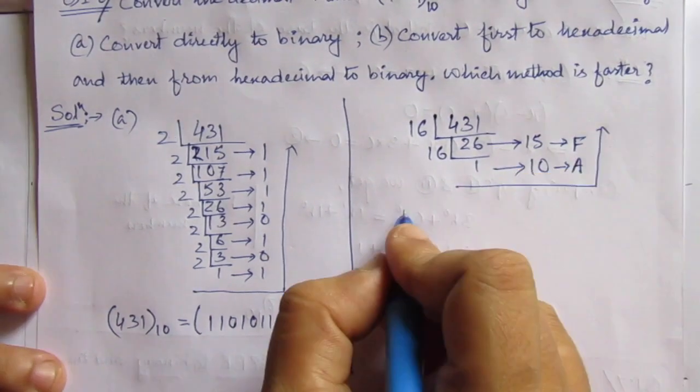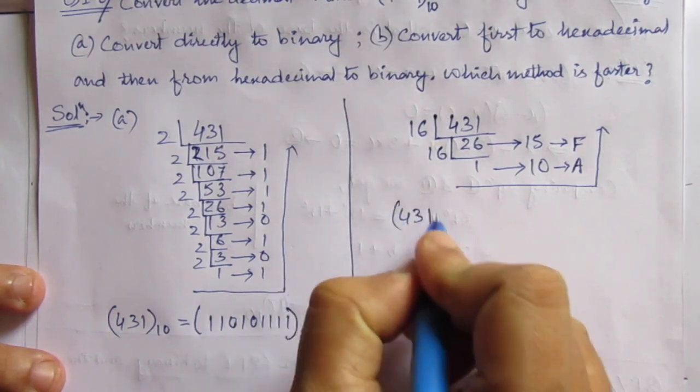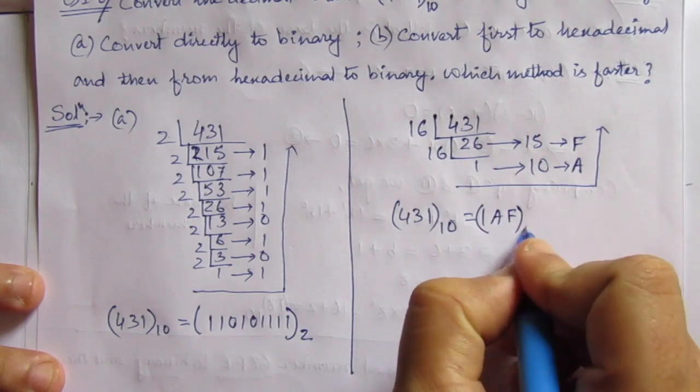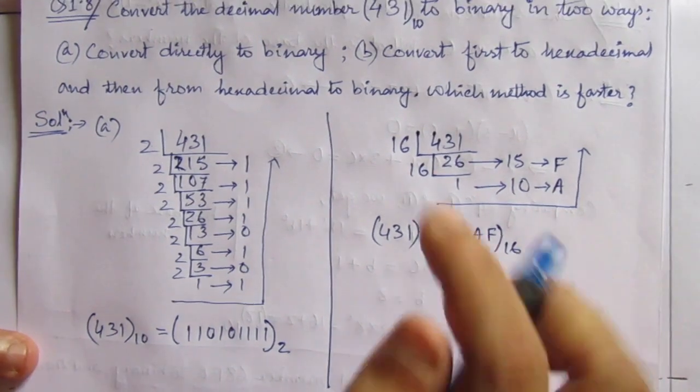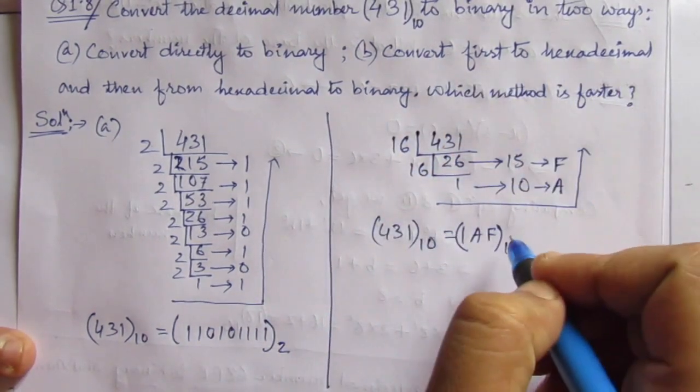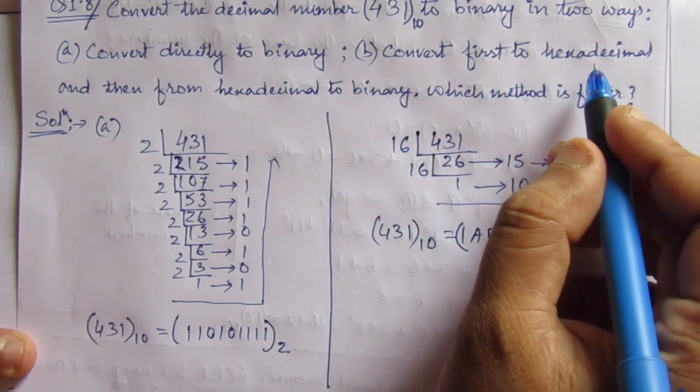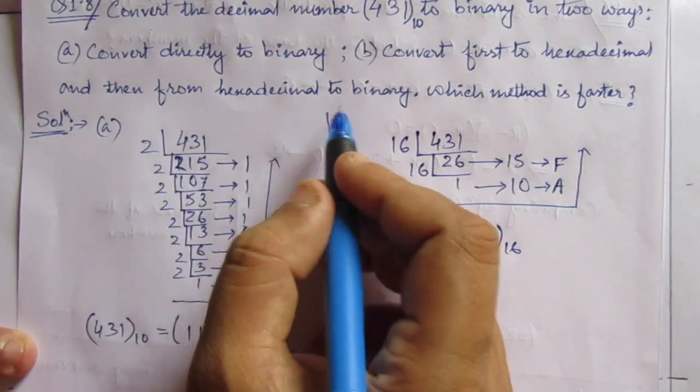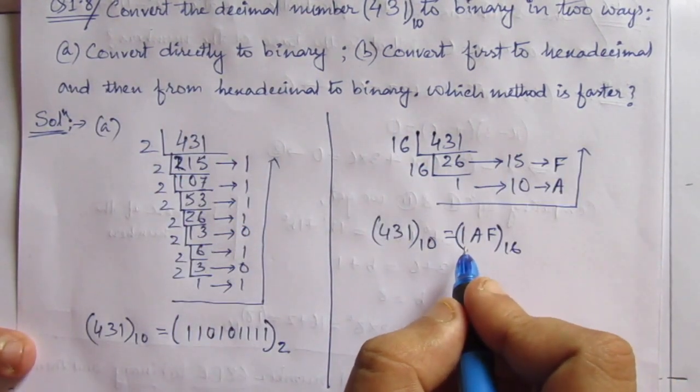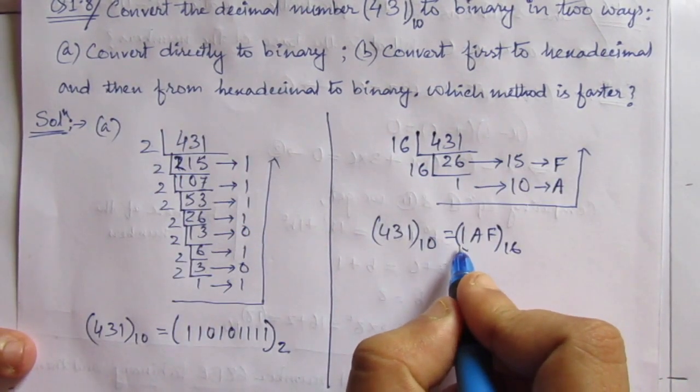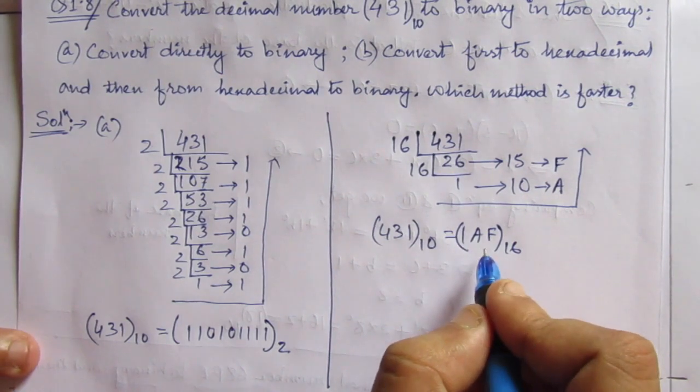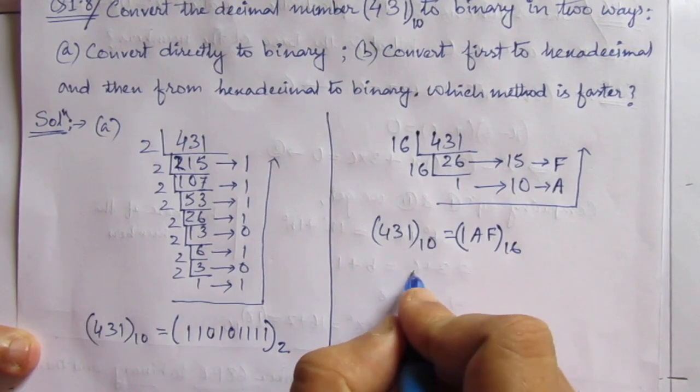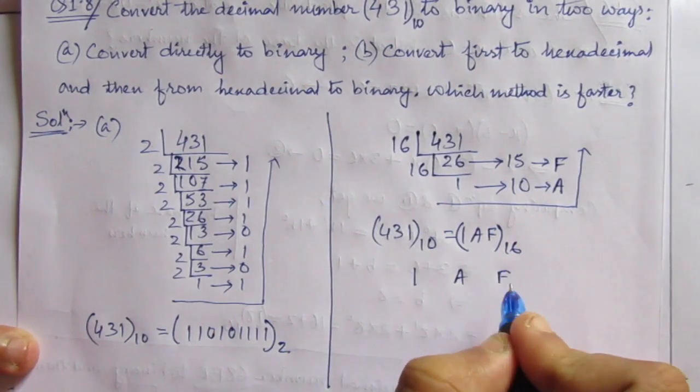We have 431 in decimal equal to 1AF in hexadecimal. In the question it is given convert first to hexadecimal. So we have converted this number into its hexadecimal equivalent and then from hexadecimal to binary. This hexadecimal number, each digit will be converted into 4 bit binary equivalent.